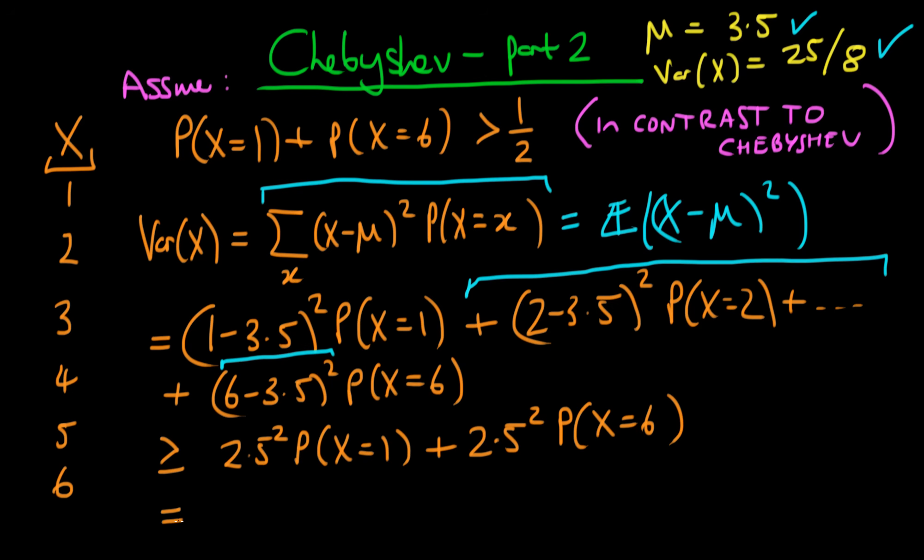And we can simplify this a bit, so we can write this as 2.5 squared times the probability that x equals 1 plus the probability that x equals 6.